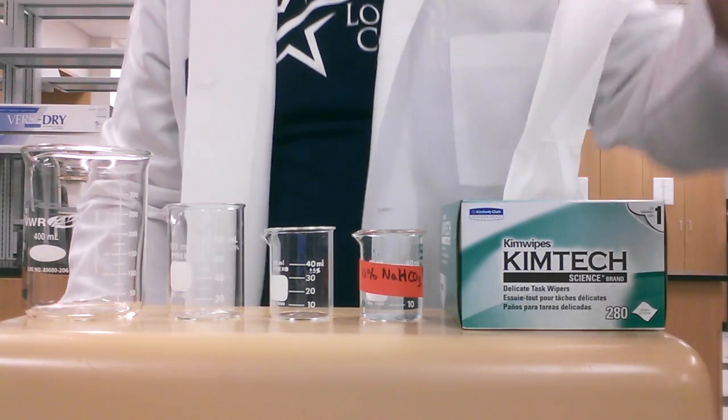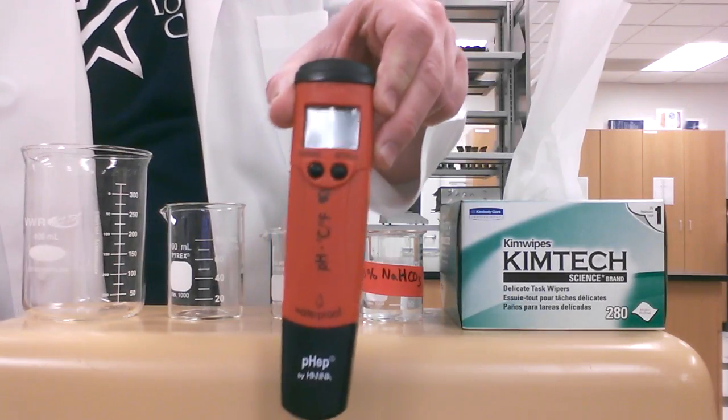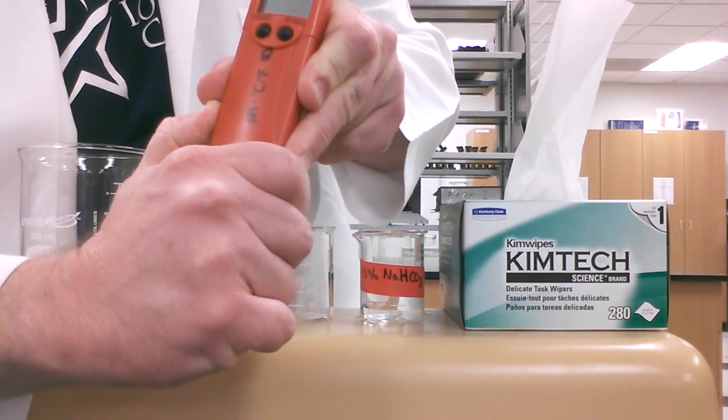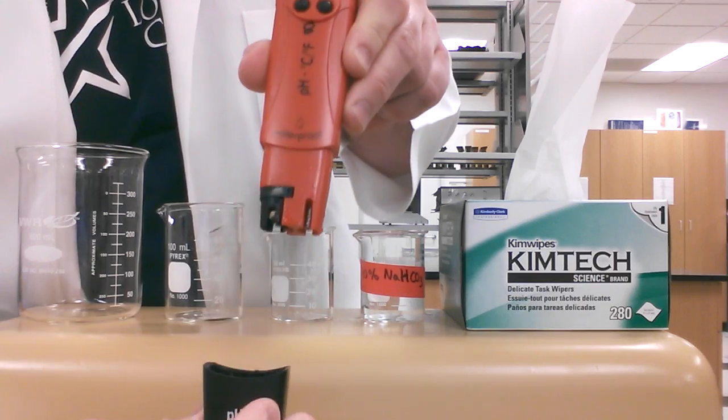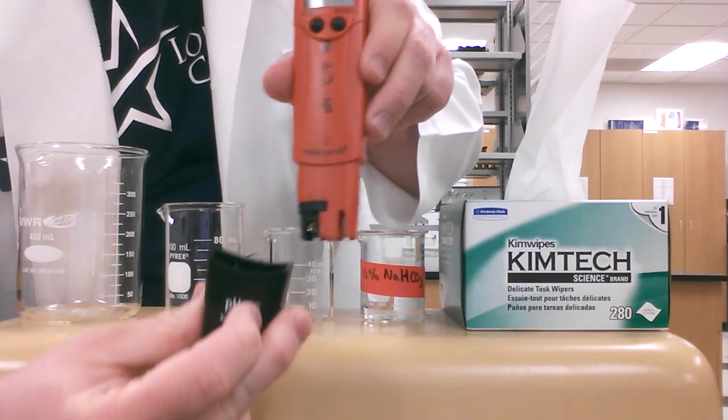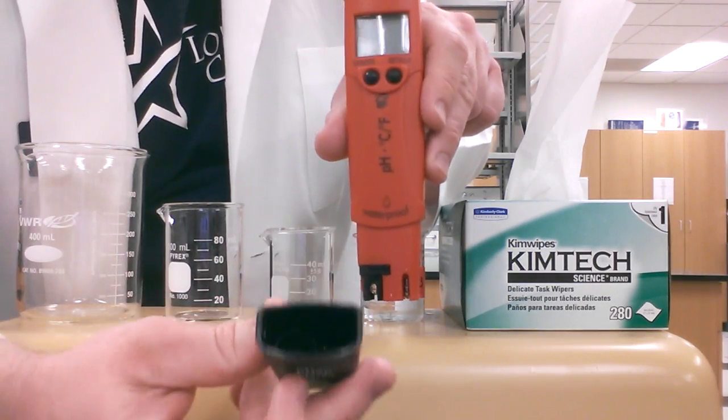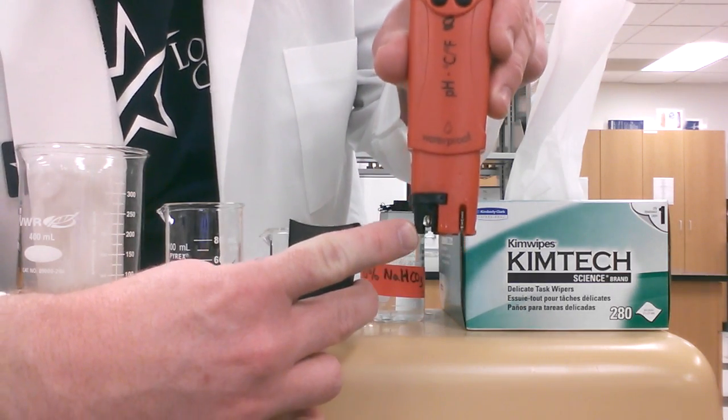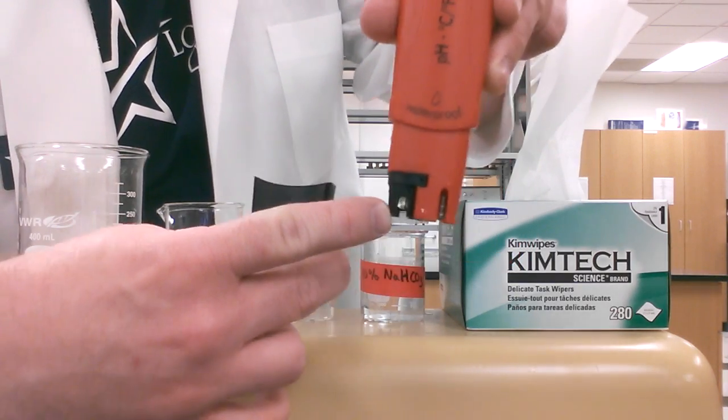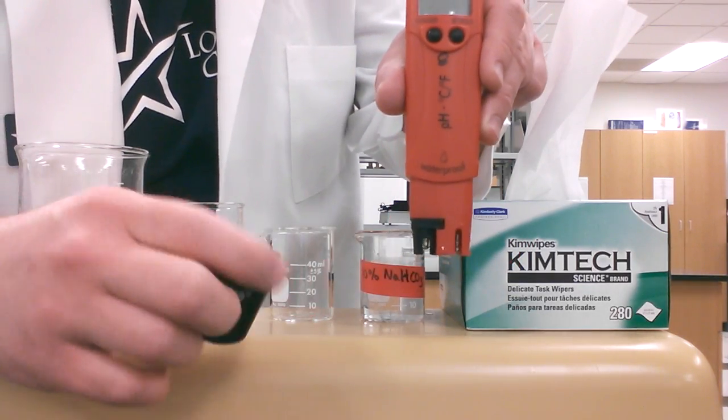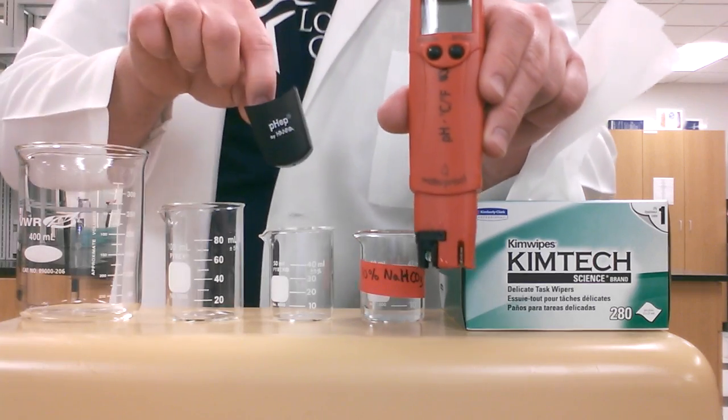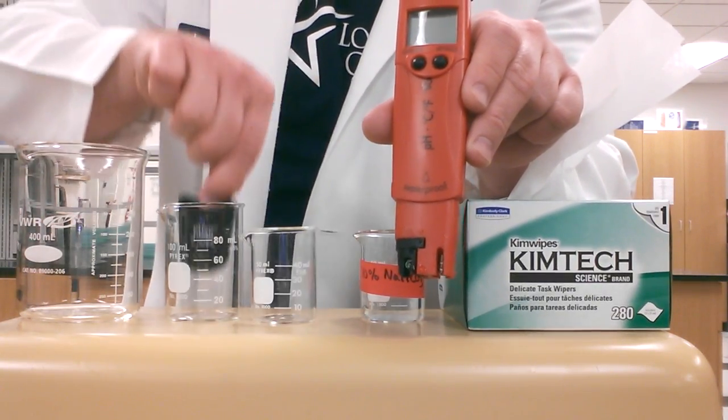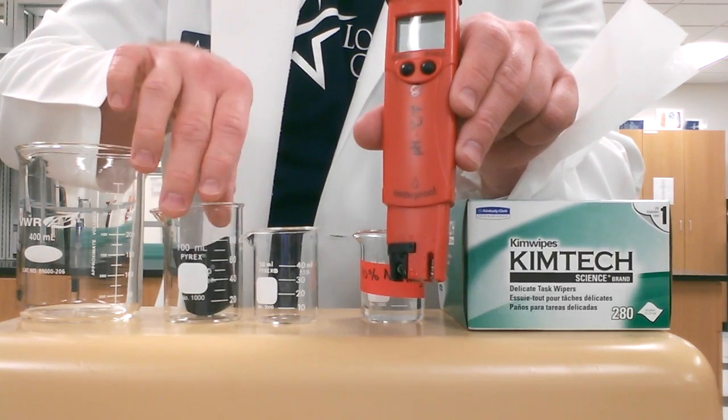The first thing we're going to do is remove the cap from the pH meter. This may take a little bit of strength. Pop this cap off and be careful because there is a little bit of solution in this cap, and that's what protects our pH electrode, this little glass bulb here, when we're not using it. I'm going to put this cap into the 50 ml beaker or the 100 ml beaker, and that's going to help me keep from losing this thing.